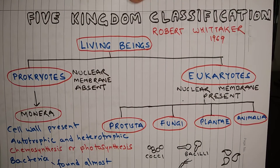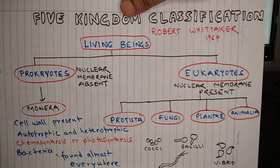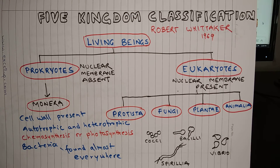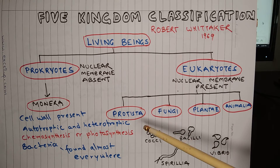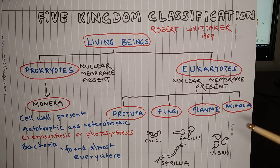The Five Kingdom Classification was proposed by Robert Whittaker in 1969, and this is the most accepted system of classification of living beings. Robert Whittaker proposed Five Kingdoms and the names of these kingdoms are Monera, Protista, Fungi, Plantae, and Animalia.